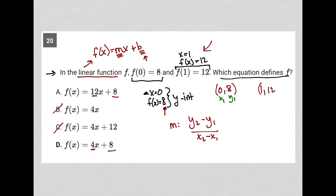X is 1, f of x is 12 or y is 12. I'm going to call this x2 and y2. So when I plug these values in, I'd have 12 minus 8 over 1 minus 0, which is equal to 4 over 1, which is equal to 4.